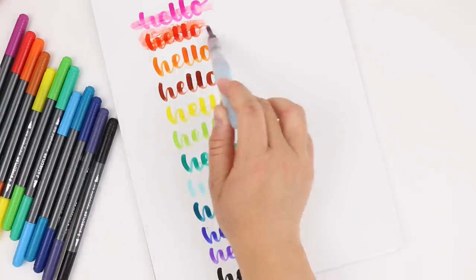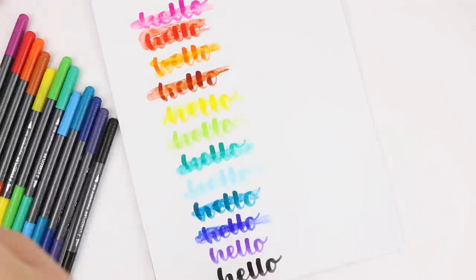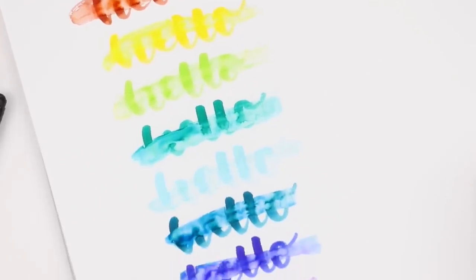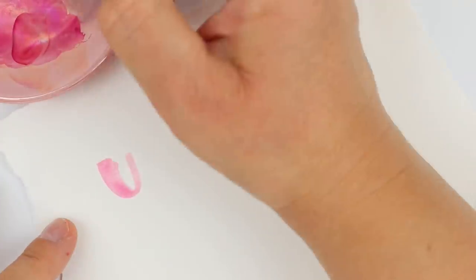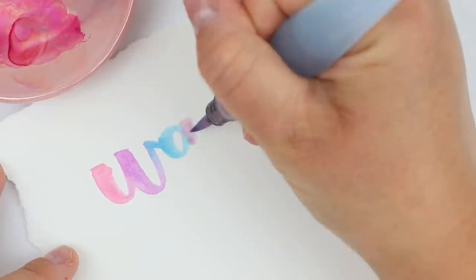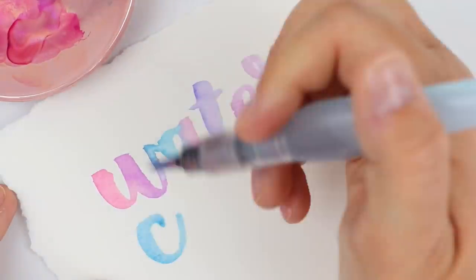As you can see this brush pen is not water resistant and I'm going to go ahead and show you how this marker works if you were to use it like watercolor. I'm just coloring some of that marker onto a piece of ceramic and then using my Pentel Aquash water brush to pick it up and it makes really beautiful lettering on watercolor paper.